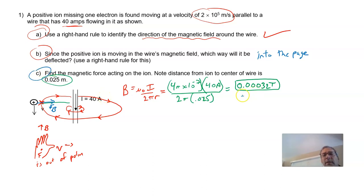We know the magnetic field strength right there. The magnetic force is FB equals QVB. And so we take the charge. The magnitude of the charge is a positive ion missing one electron. So it's got a net charge of 1.6 times 10 to the minus 19 coulombs.